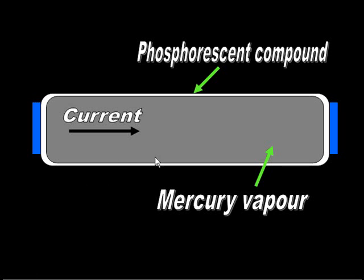A fluorescent tube consists of a glass vessel with mercury vapour inside. On the inside of the glass vessel is a phosphorescent compound. We pass an electric current through the mercury vapour.